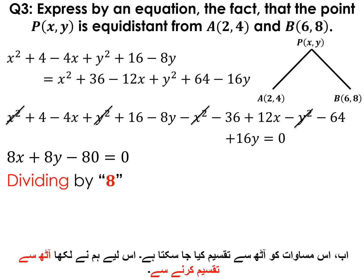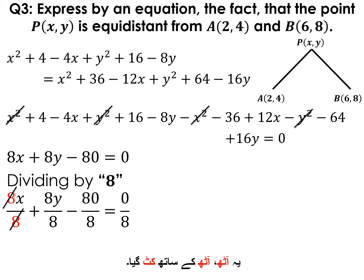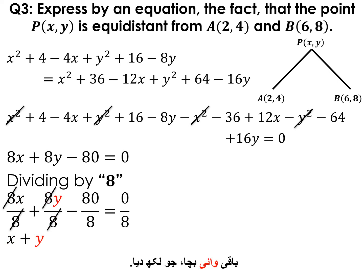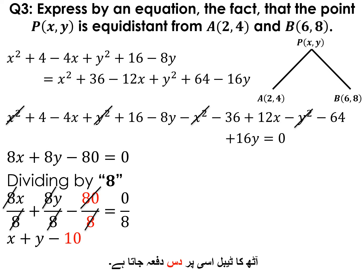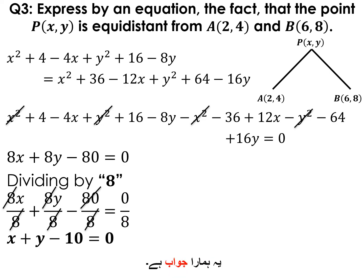This equation can be divided by 8. Dividing all terms by 8: 8x ÷ 8 = x, 8y ÷ 8 = y, and 80 ÷ 8 = 10. Since 0 ÷ 8 = 0, the final answer is x + y − 10 = 0. This is our answer.